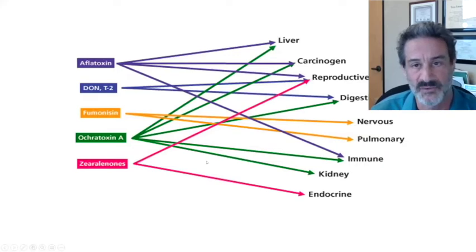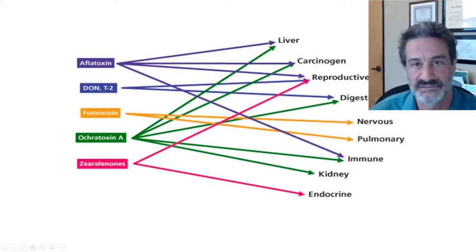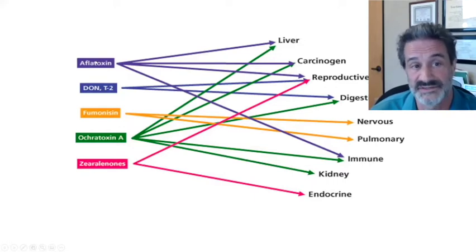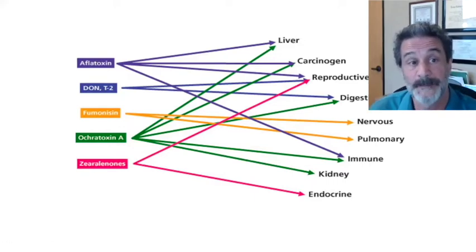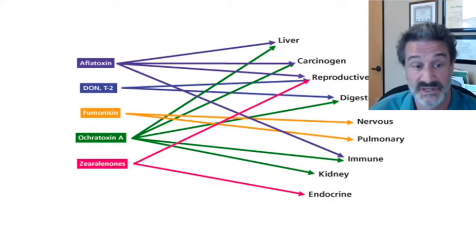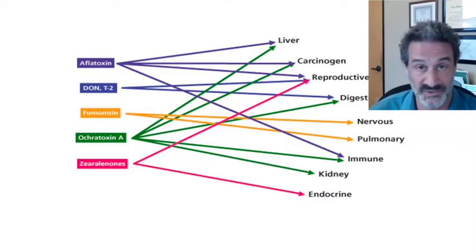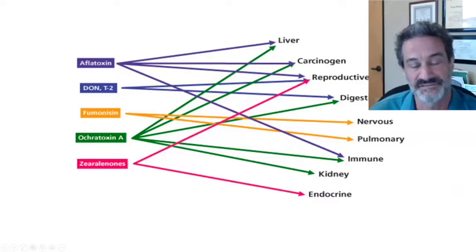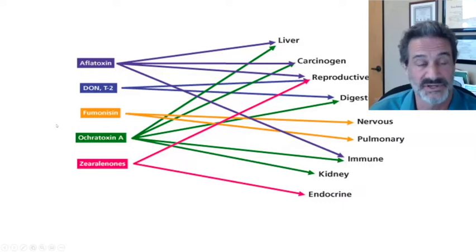Why do we even care? If you have any of these organs, you care because mycotoxins affect all of them. Different mycotoxins affect different organs and are notorious for causing certain problems. Zearalenone is very hormone-disrupting — associated with infertility and many other reproductive issues in animals and likely people. Ochratoxin is very common; virtually everyone has some level of ochratoxin from food.